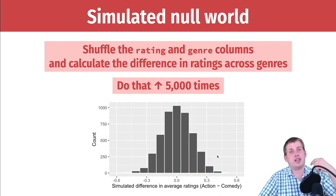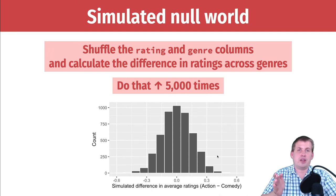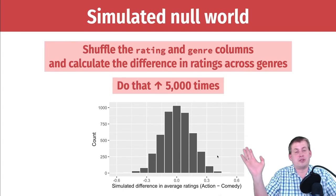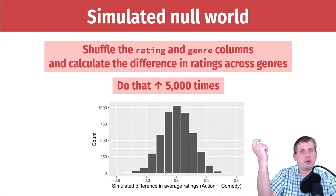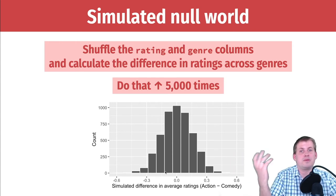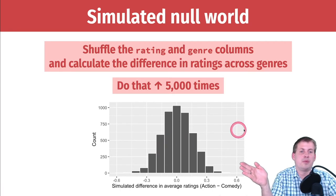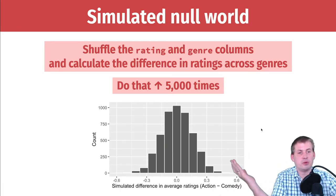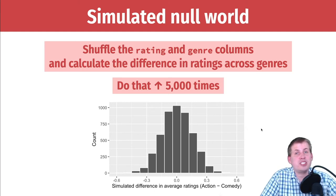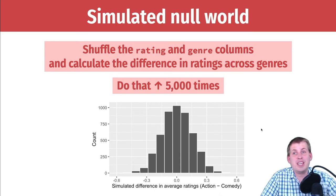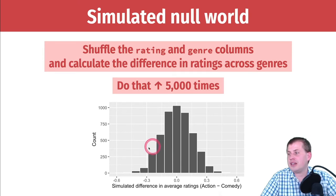Sometimes the simulated difference can be a little above zero — like 0.2 — which is totally plausible in a world where there's no true difference. You can also see negative 0.3, where action movies appear more popular by 0.3 points; that's still plausible because of sampling error. This is what our null world looks like: a distribution of differences centered around zero. We then place our measured difference of 0.43 in this null world to see if it fits.